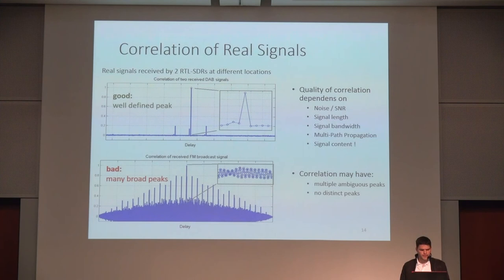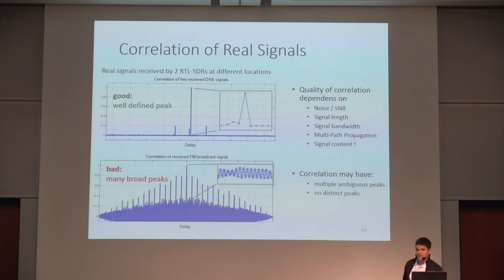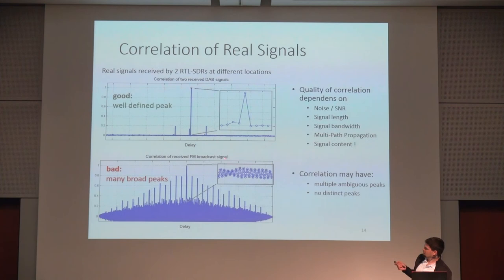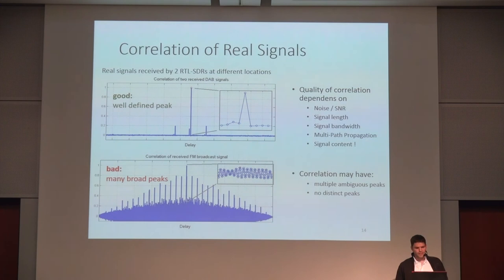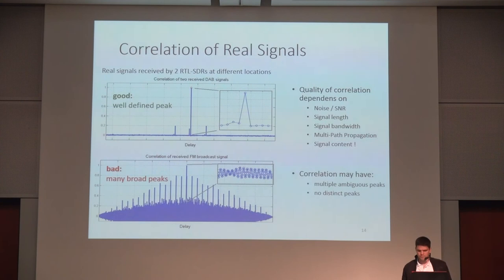I've depicted two real-world signals and their correlations. The first is a DAB+ signal — there is a distinct peak and you can identify a single sample corresponding to the peak, so you can very precisely measure delay. For an FM broadcast signal, however, there are many different peaks and the peak is not quite distinct, so there is a lot of noise. In general, the quality of the correlation depends on many factors: noise, signal length, signal bandwidth, multipath propagation, and signal content — especially for FM.